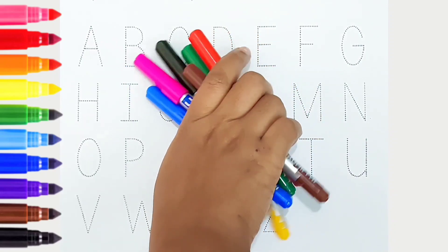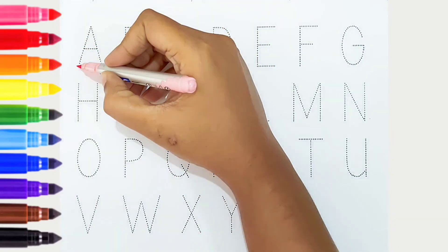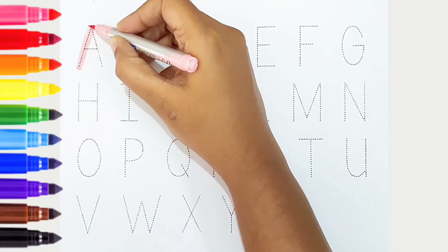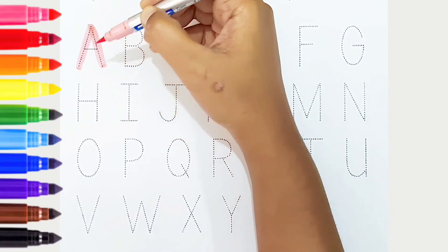Hi kids! Today we can learn the alphabets from A to Z. Let's begin. A, light pink color, is for apple.